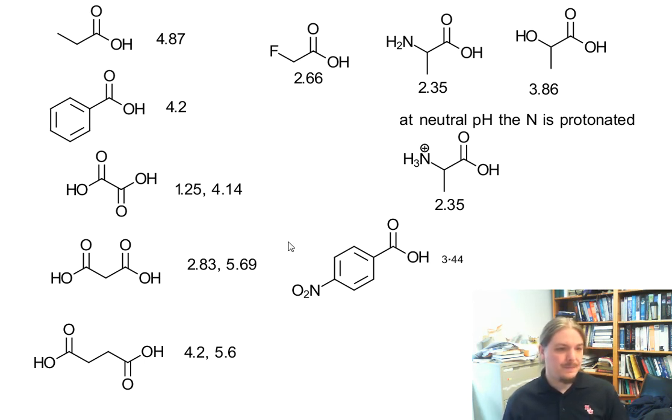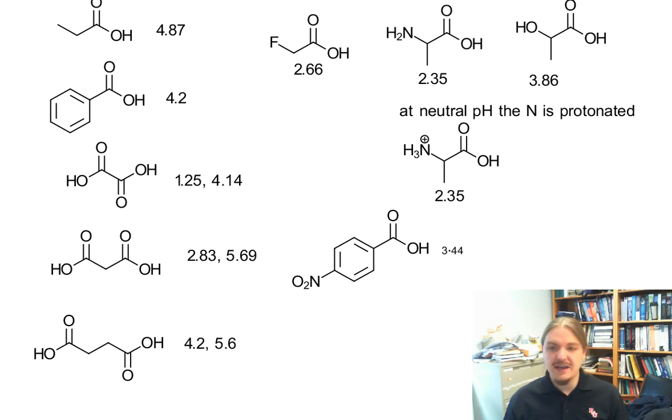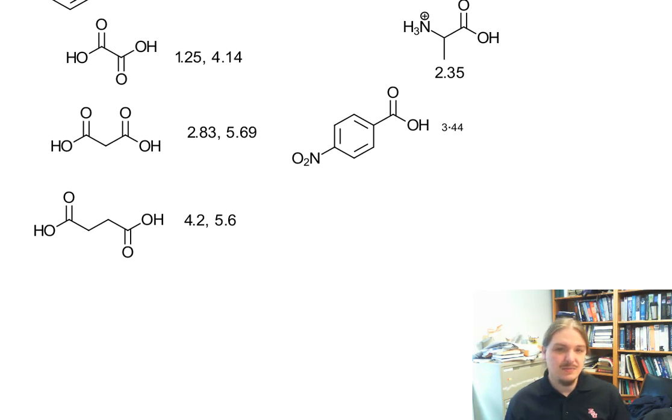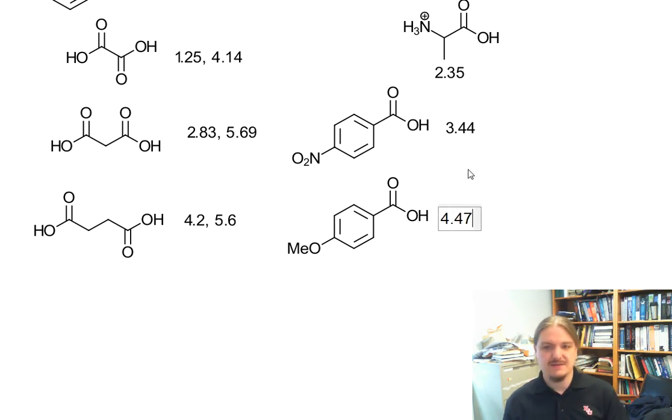And if you have an electron donating group on benzoic acid, you should expect a higher pKa and you would get that too because electron donating groups destabilize anions. So for example, paramethoxy benzoic acid is 4.47. So a little bit less acidic than benzoic acid. So here's my summary of pKa's.